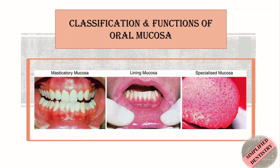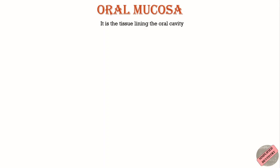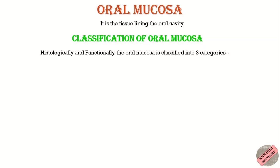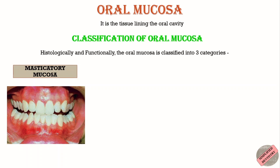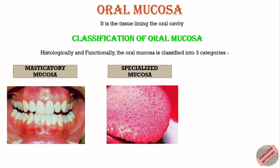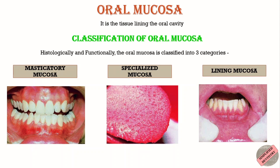I have already made videos about the structure of oral mucosa and keratinized and non-keratinized oral epithelium, so you can watch those videos. As already discussed, the oral mucosa is the tissue lining the oral cavity, and histologically and functionally it can be classified into three categories: first is masticatory mucosa, second is specialized mucosa, and third is lining mucosa.